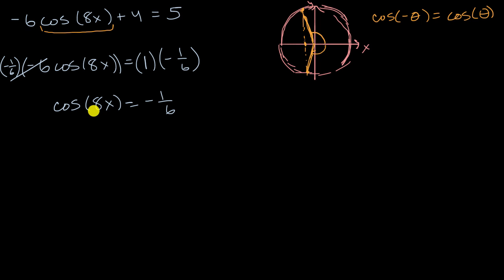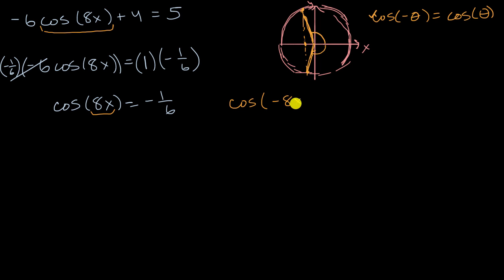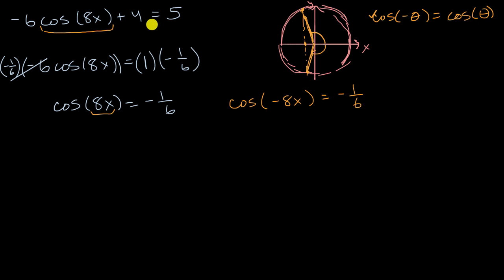So if cosine of eight X equals negative one sixth, then using this identity, cosine of negative eight X also equals negative one sixth. This expands our solution set because it gives us another X value. But are we done?